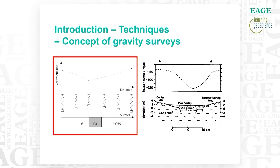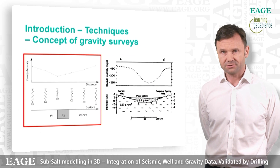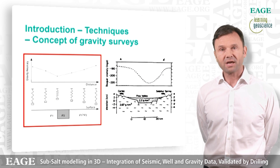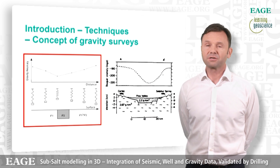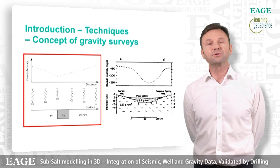To introduce the techniques, we use gravity extensively in this integration. Gravity is measured by an accelerometer, most often modeled as a mass on a spring, as you see on the left. We're often looking for sedimentary basins, which are less dense than the host basement rock, as you see in the diagram on the right. So we have less acceleration, less gravity for these sedimentary units.